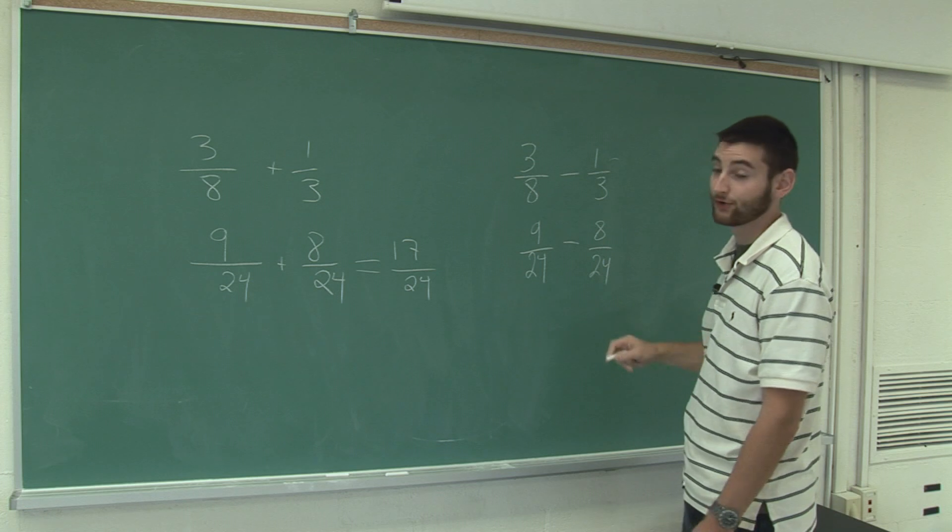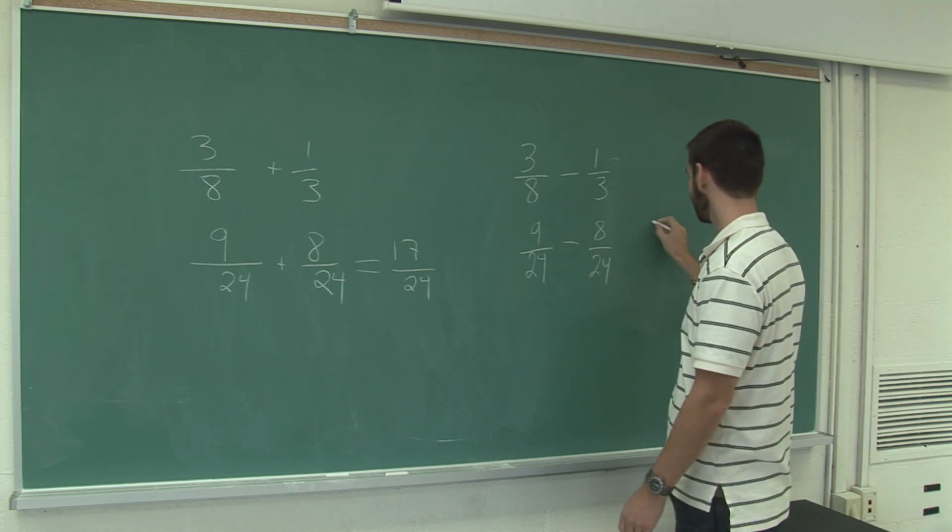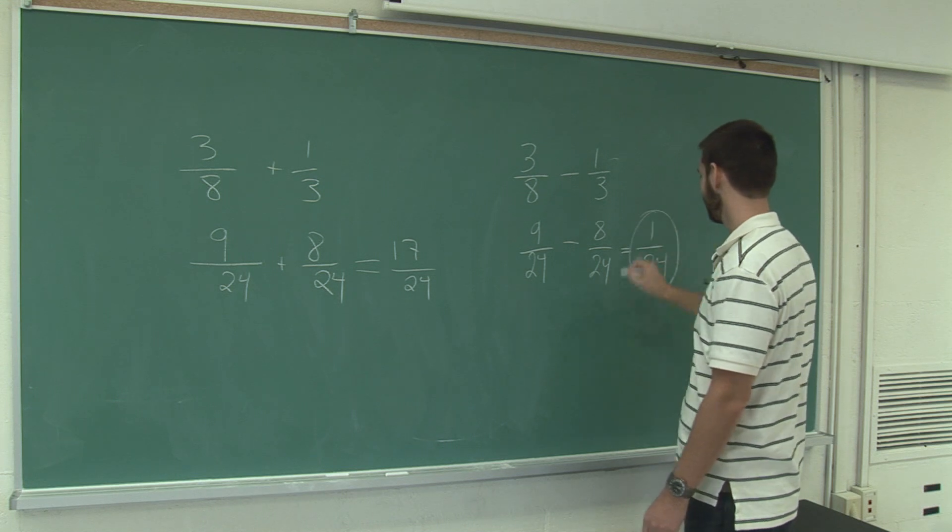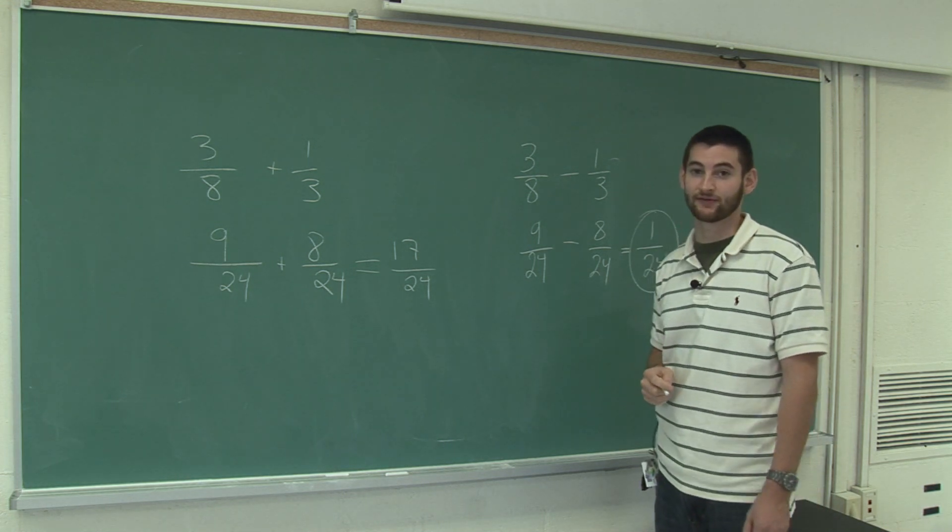And now we just subtract the numerators. 9 minus 8 is 1. And that's the answer. That's how you subtract fractions with different denominators.